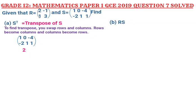Let's find the order of this matrix first. As you can see, this matrix has 2 rows and 3 columns. So since this matrix has this order, the transpose of this matrix will have 2 columns and 3 rows.